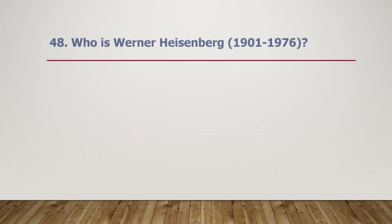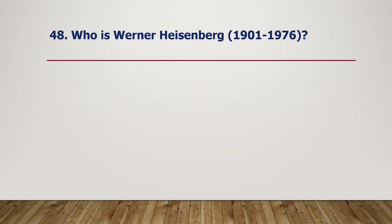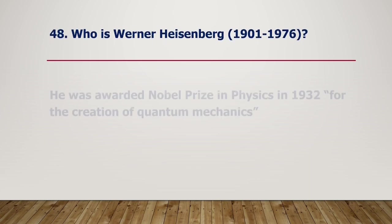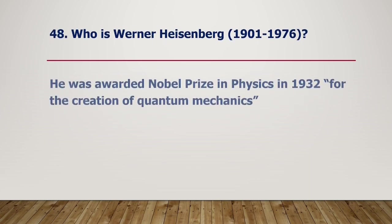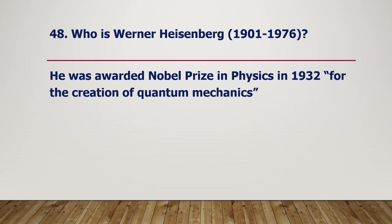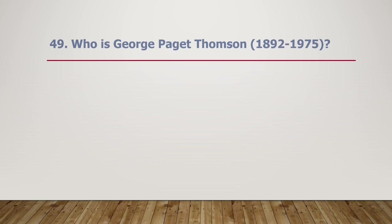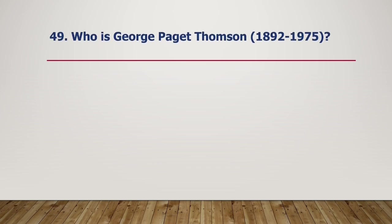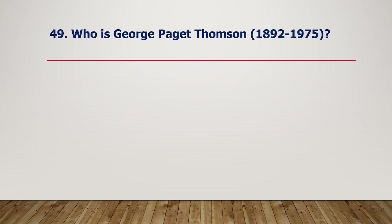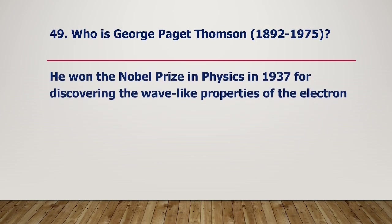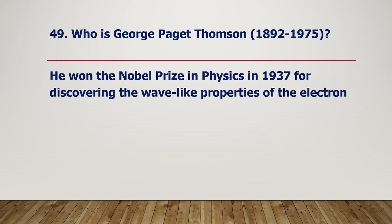Who is Werner Heisenberg, 1901–1976? He was awarded the Nobel Prize in Physics in 1932 for the creation of quantum mechanics. Who is George Paget Thomson, 1892–1975? He won the Nobel Prize in Physics in 1937 for discovering the wave-like properties of the electron.